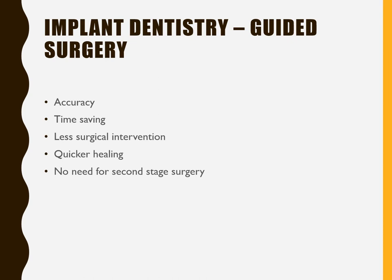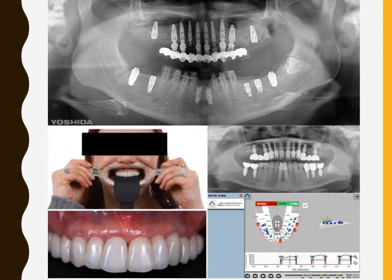Coming to implant-guided surgery: in the conventional approach, an incision is made, the flap raised, and drills used sequentially — pilot drill, then progressively larger drills based on implant size — followed by implant placement, flap closure, second-stage surgery, and healing abutment placement. With guided surgery, fewer steps are needed and accuracy is greatly improved. Looking at the OPG, implants placed with guided surgery are very parallel to the remaining tooth structures.